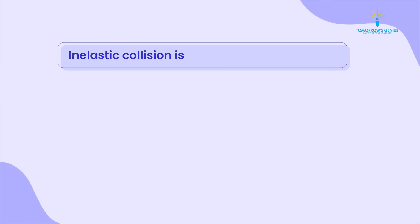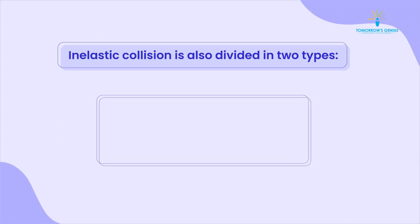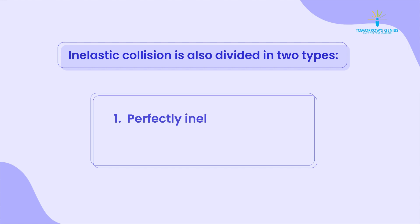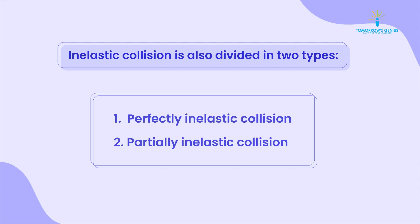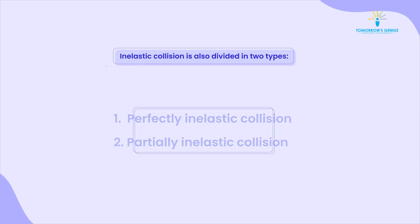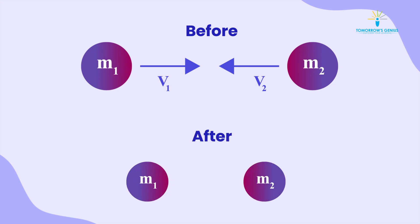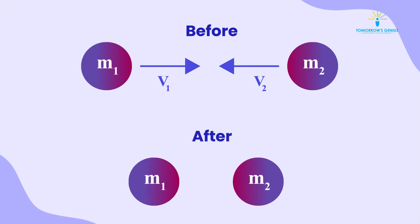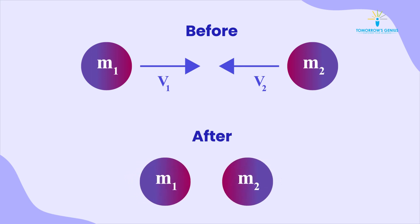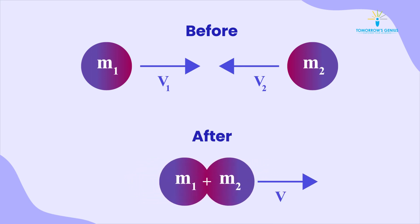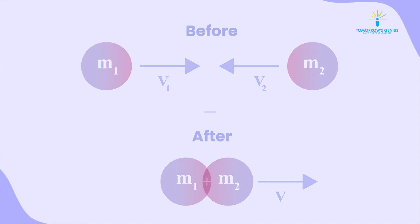Inelastic collision is also divided into two types: perfectly inelastic collision and partially inelastic collision. In perfectly inelastic collision, bodies stick to each other and move together after collision.